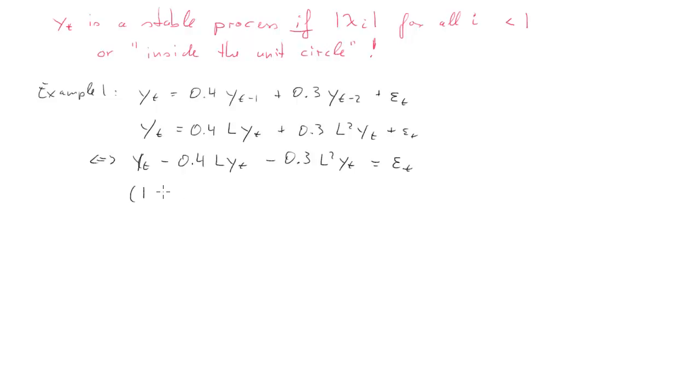Now we can factor out the y as we did before. We get this characteristic polynomial times y_t equals epsilon_t. And once we have that, it's pretty easy to basically state the characteristic polynomial or leading to the characteristic equation.